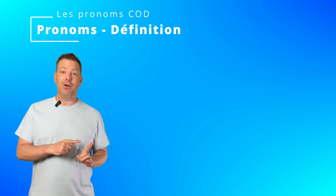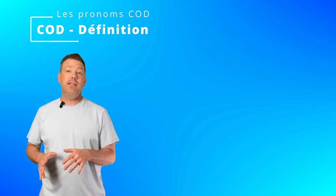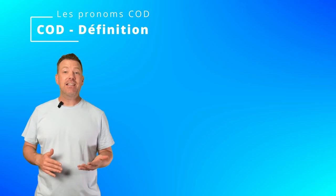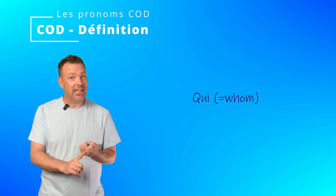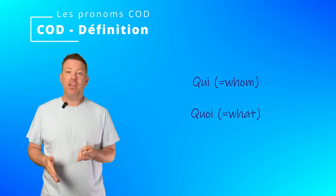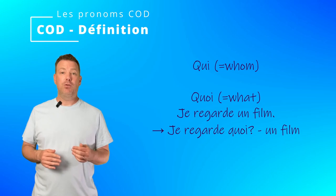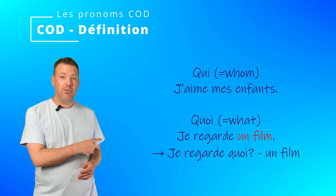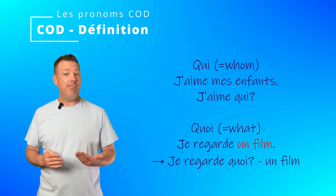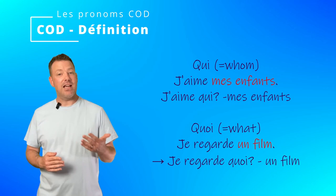Just very quickly, C-O-D, complément d'objet direct, can be found in a sentence by taking the subject and the verb and asking the question qui (whom) for people, and quoi (what) for things. For example: je regarde un film. Je regarde quoi? The answer is un film, which is the direct object complement. Another example with people: j'aime mes enfants. J'aime qui? The answer is mes enfants, which is the direct object complement.